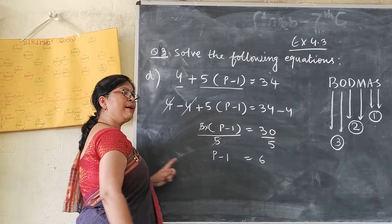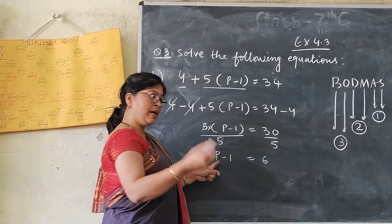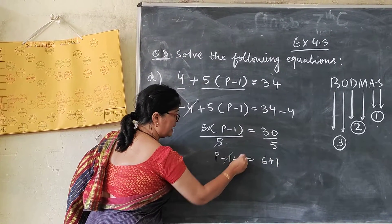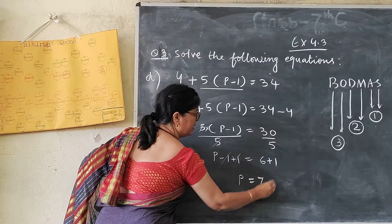Now I want to remove this minus 1. Plus 1. Opposite of minus 1 is plus 1 here. Plus 1 on the right side. So here we cancelled. T equals to 7 is the answer.